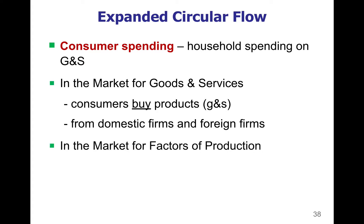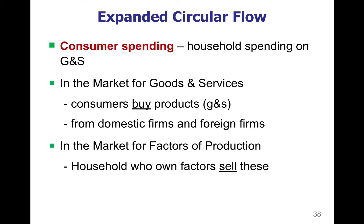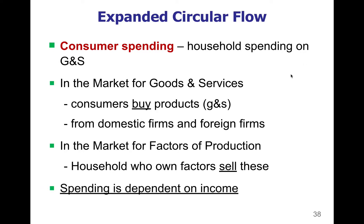The other market is the market for factors of production. These are the things that go into making products. In this market, it's a little bit different — it's the households or consumers who are the ones selling. You sell your land, labor, or capital that you own to the businesses, and the businesses are the buyers. The amount of spending in the economy is dependent upon income. So if income inequality is rising and average consumers are making less money after adjusting for inflation, then spending will go down, and that will hurt businesses.